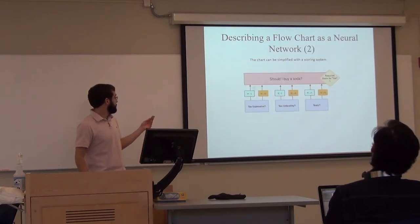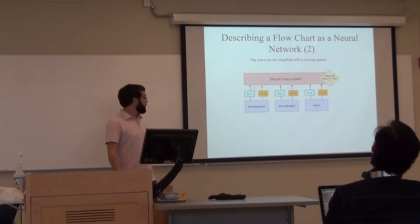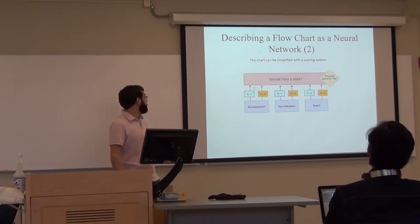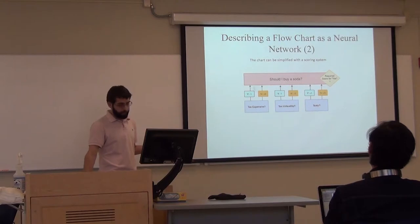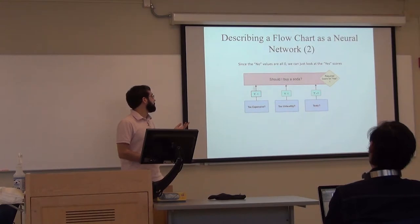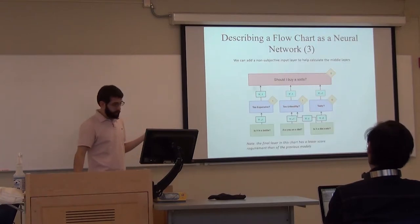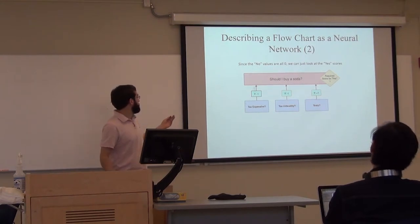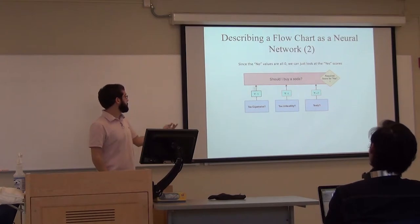If it's too expensive, then I'll give it minus one point. If it's too unhealthy, minus one point. And if it's tasty, give it one point. This is a slightly simpler way of describing that graph here. If the point value is one or more, then I'll buy the soda. If it's less than one, then I won't. This is kind of like an example of a one-layer neural network. You have your too expensive, too unhealthy, and tasty variables, and they go into the decision of whether or not you want to buy a soda.